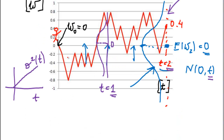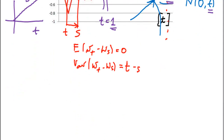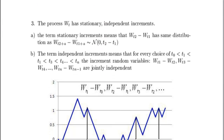So what this means: if I look at my Brownian motion at some point at time t and at time s, the expectation of the difference W(t) minus W(s) equals 0, and the variance of this difference equals t minus s. Yet again, the variance is proportional to time. We'll show these properties more formally later on, one by one.